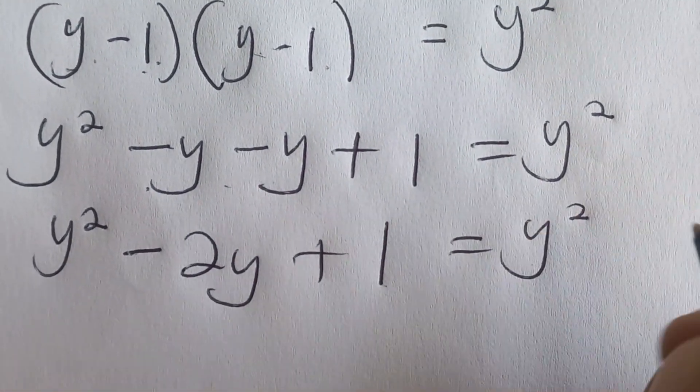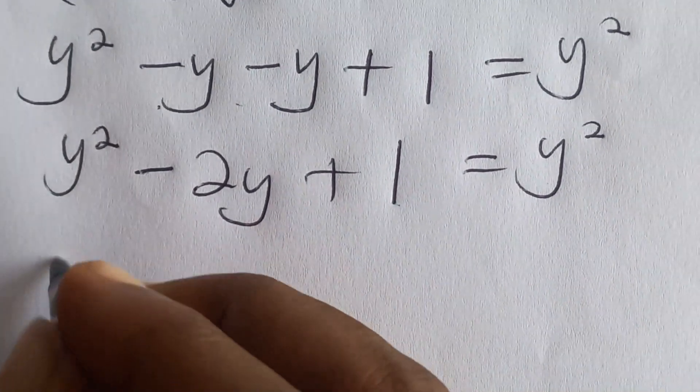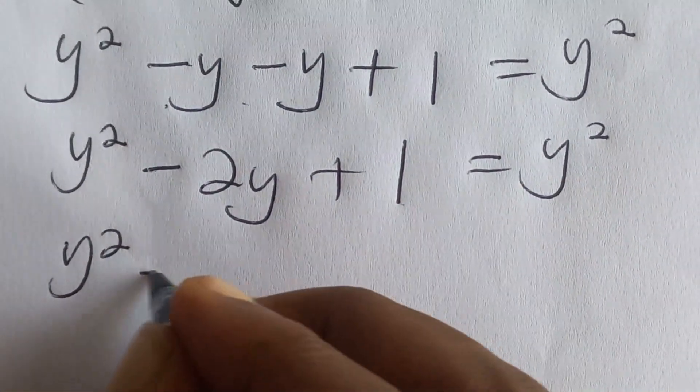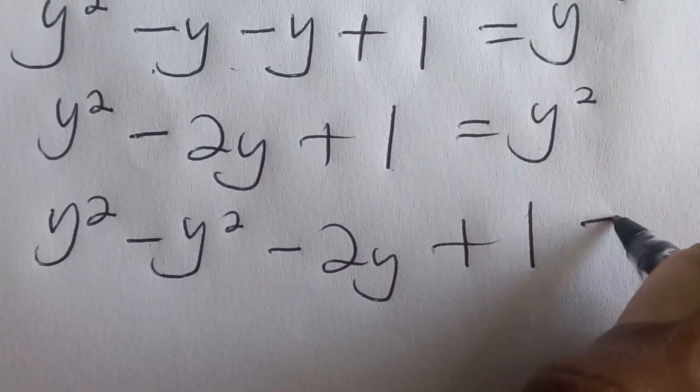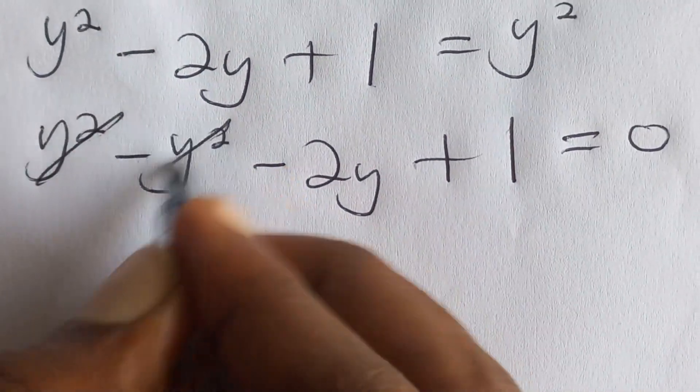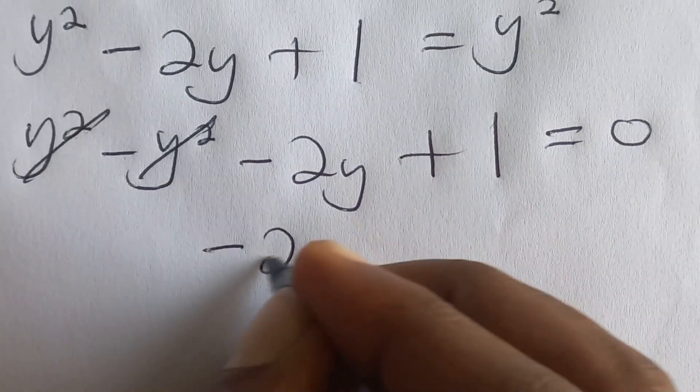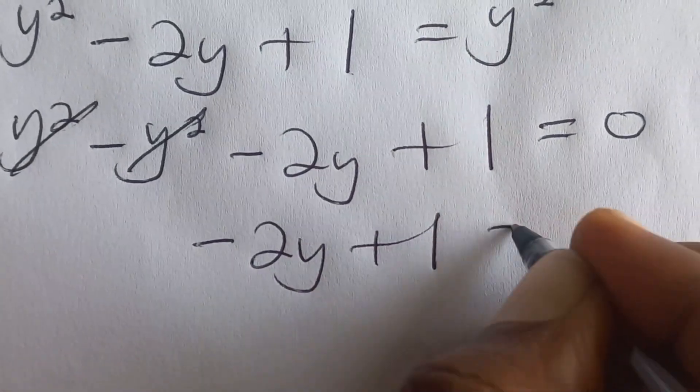Now you can see that y squared, this one cancels with y squared, leaving us with y squared minus 2y plus one equals zero. Y squared will cancel this y squared, leaving us with negative 2y plus one is equal to zero.